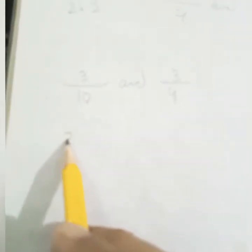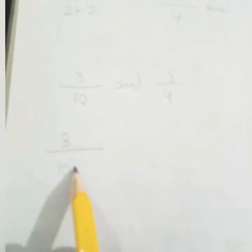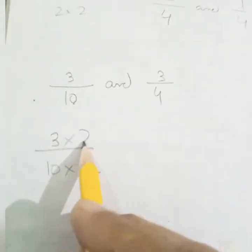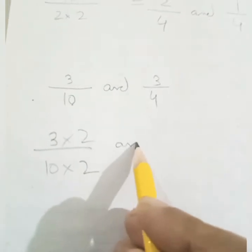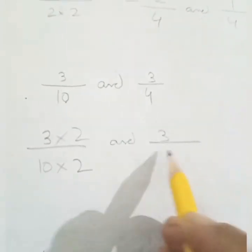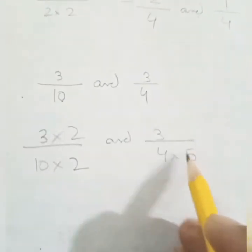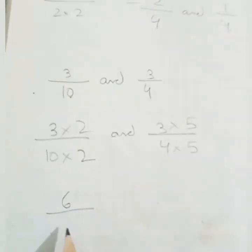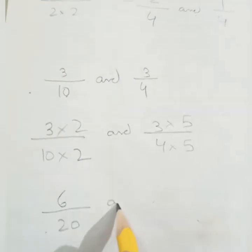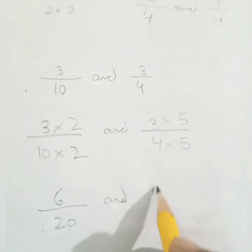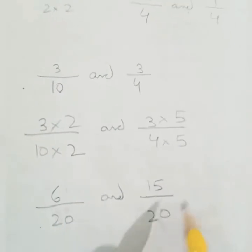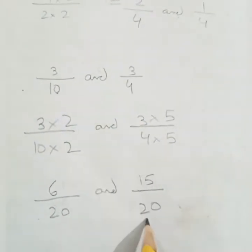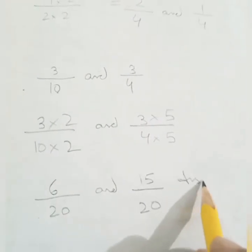The common denominator will be twenty. Three upon ten multiplied by two gives six upon twenty, and three upon four multiplied by five gives fifteen upon twenty. So six upon twenty and fifteen upon twenty — the denominator is common. This is our answer.